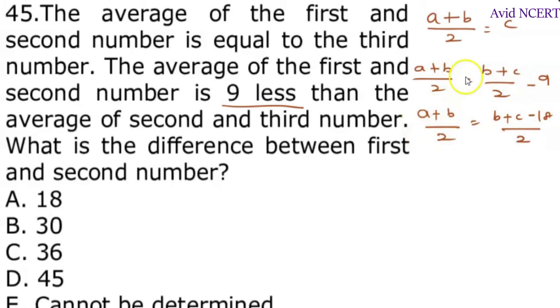Which is C. A plus B by 2 is also equals to C, which means C equals B plus C minus 18 by 2. You can solve by any method substituting any values. We have to find the values of A, B and C. Here also you make it as A plus B equals 2C.